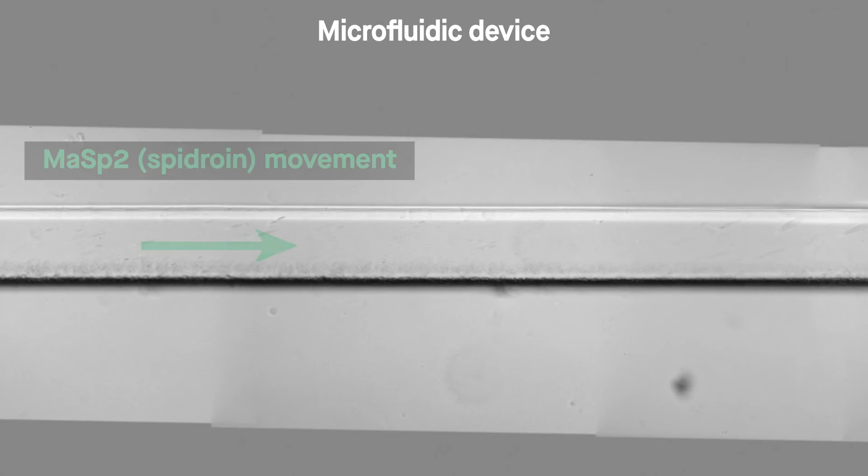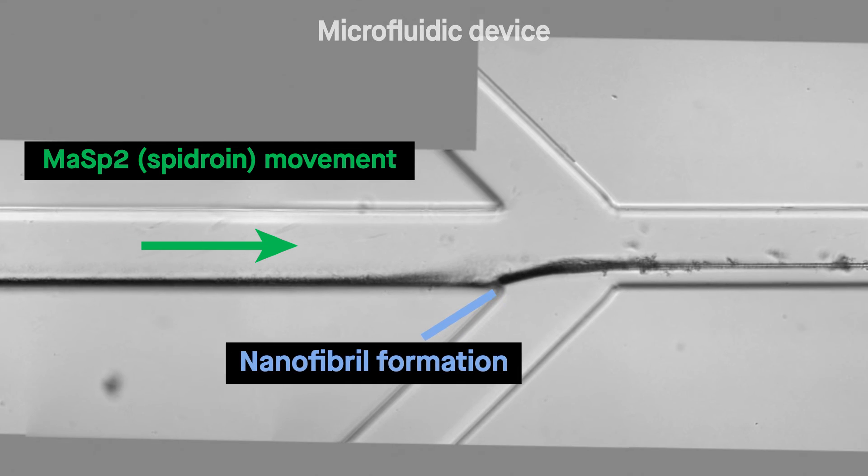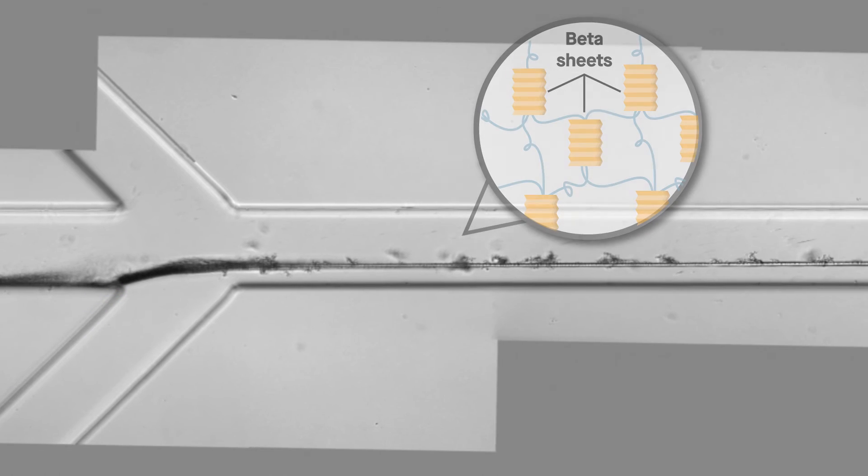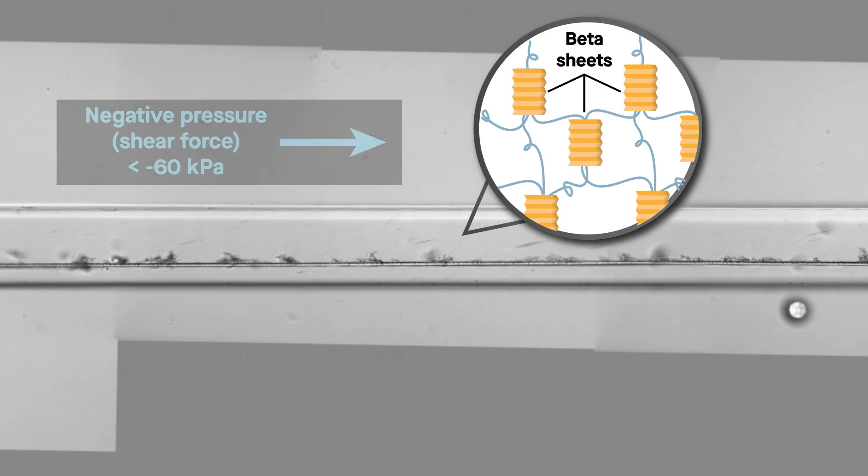Raman measurements confirm that as the spidroin moved through the device, the artificial silk developed more beta-sheet structure.